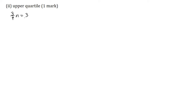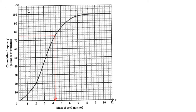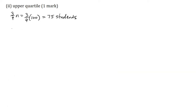Part 2: estimate the upper quartile for one mark. The upper quartile mass corresponds to three-quarters of the total frequency. So three-quarters n is equal to three-quarters multiplied by the total frequency of 100, which is equal to 75 students. I will go to the cumulative frequency curve and use graphical interpolation. At 75 students on the y-axis, we go across to the cumulative frequency curve and draw a line straight down to the x-axis. So the upper quartile mass, Q3, is equal to 4.3 grams.